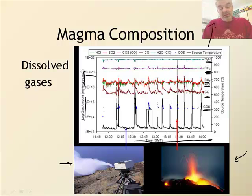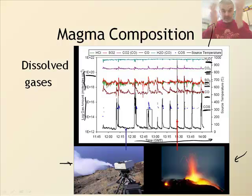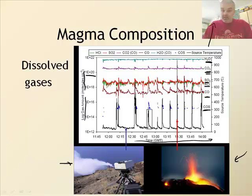Magma has lots of different things in it — silicates, silicon dioxides, and all these kinds of chemicals. We've learned about the different types of volcanoes today, so we should have learned a lot of cool stuff.